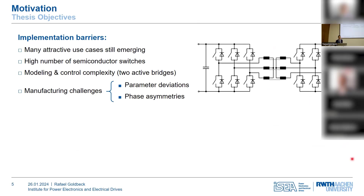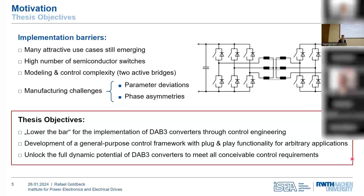Another implementation barrier is the complexity with respect to modeling and control, which is due to the two active bridges on either side of the medium frequency transformer, making the mathematical description a challenging task. This challenge is further increased if we take into account manufacturing tolerances, especially with respect to magnetic materials, which may lead to parameter deviations and phase asymmetries.